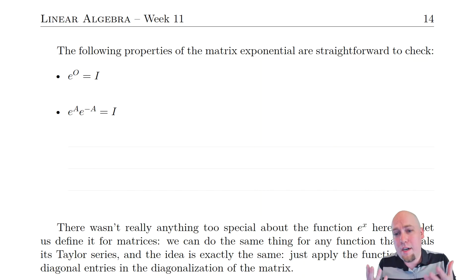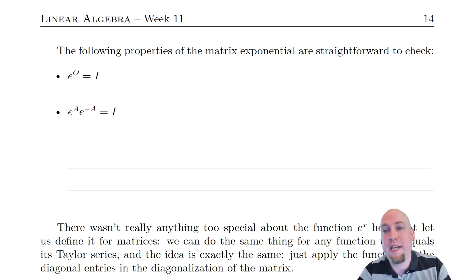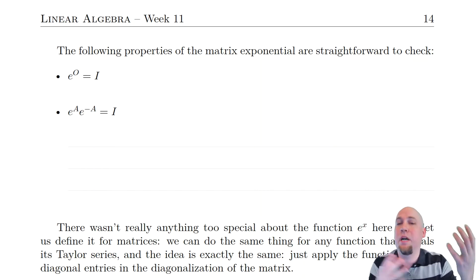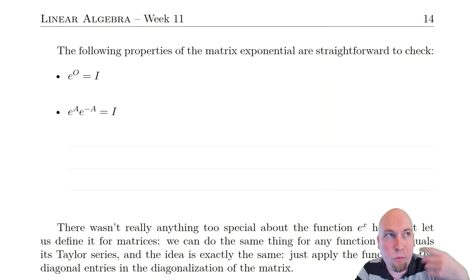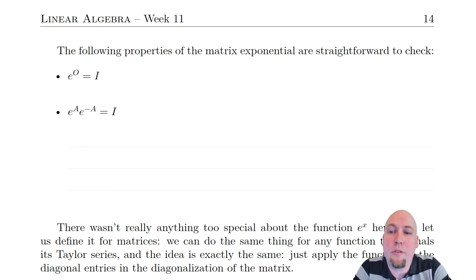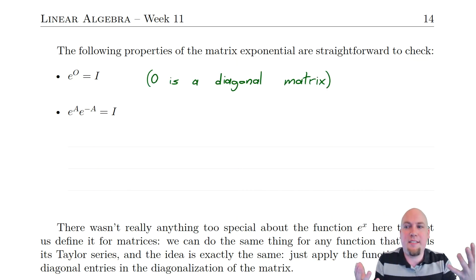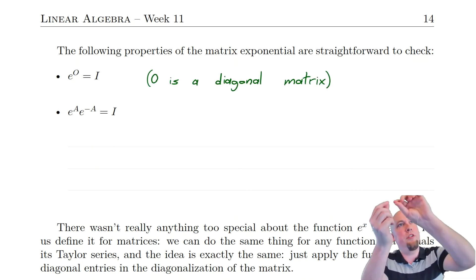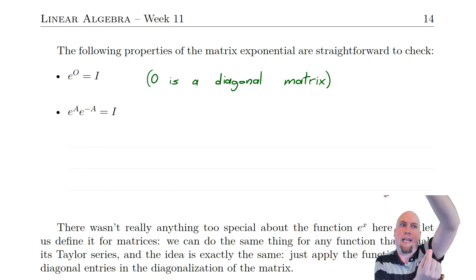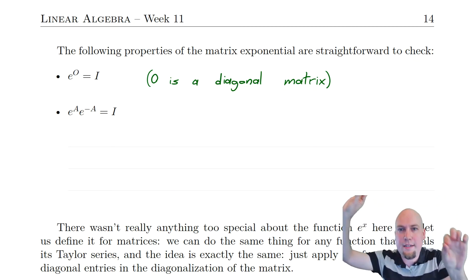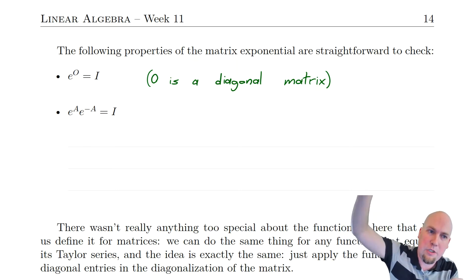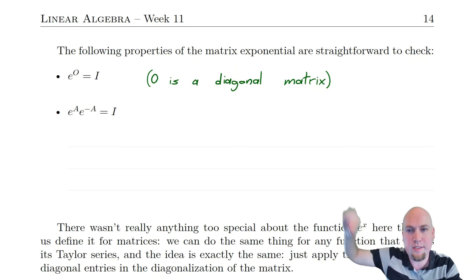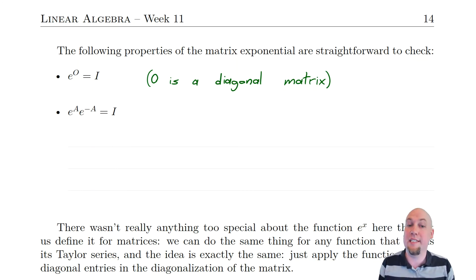There are a couple of useful properties of this matrix exponential that are analogous to properties it has for real numbers. For real numbers, e to the power of zero equals one, and the matrix version of that statement is still true: e to the power of the zero matrix is the identity matrix. This is because the zero matrix is diagonal, so you apply e to each diagonal entry, and e to the power of zero is one, turning all diagonal entries into ones — in other words, turning the zero matrix into the identity matrix.